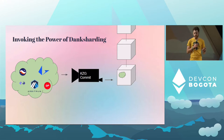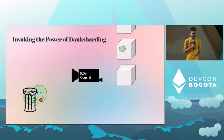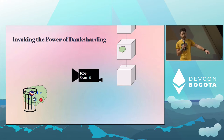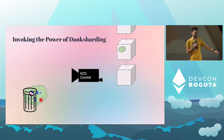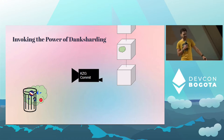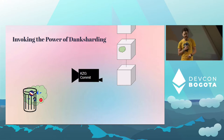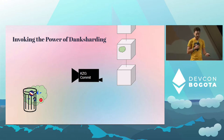A KZG commitment allows us to take this data and only put a tiny reference to it on chain, but we can also prove wonderful things about this data using this tool. We take the data, and once the chain has progressed a little bit, we can throw it away. What we've been guaranteed is not that the chain stores the data forever — we can't keep doing that — but that everyone had access to the data.